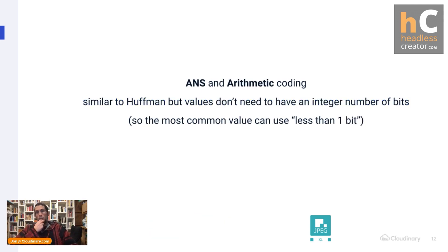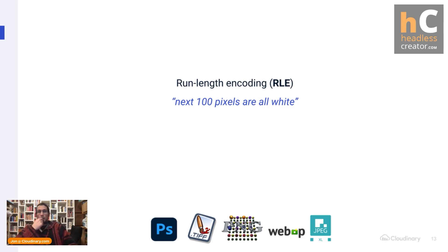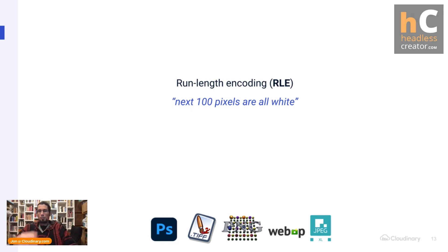There are variants of Huffman coding that can use less than 1 bit per value — ANS is one, and arithmetic coding is another. Another very commonly used technique in lossless compression is run length encoding. If you have a number of pixels in a row with the same value, instead of encoding that value many times, you can say 'the next N pixels are all this color.' This is done in binary representation, and if the run is long enough, it becomes a more concise way of representing it.